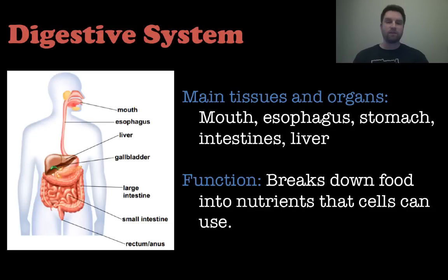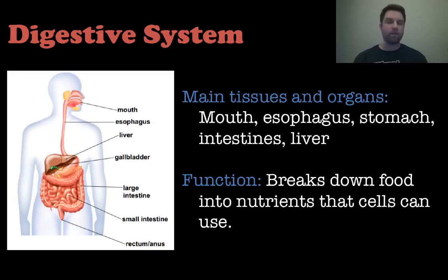Next is the digestive system — mouth, esophagus, stomach, intestines, liver. This is the system that breaks down all your food into different nutrients that can be used by the cells. You eat food, enzymes break everything down, the food moves through your system, and then comes out.